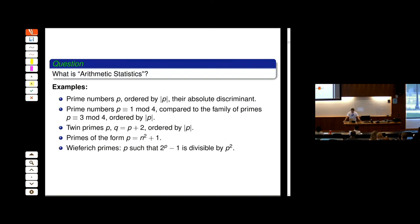Twin primes are a family where we conjecture there are infinitely many such objects, but we don't know. That doesn't stop us from trying to conjecture how many there should be — what's the asymptotic formula for how many twin primes are there up to a given height? And where do those formulas come from, if we don't even know there are infinitely many? How do you dare to conjecture that not only are there infinitely many, but asymptotically exactly this many?